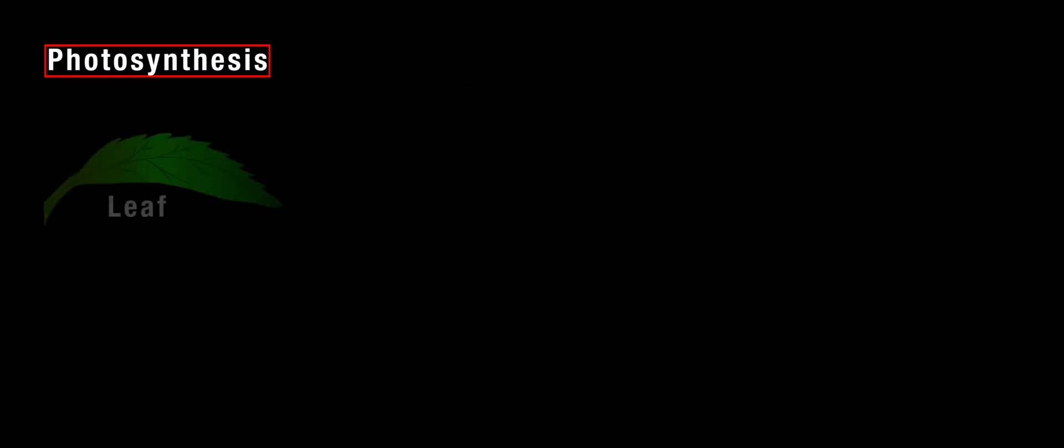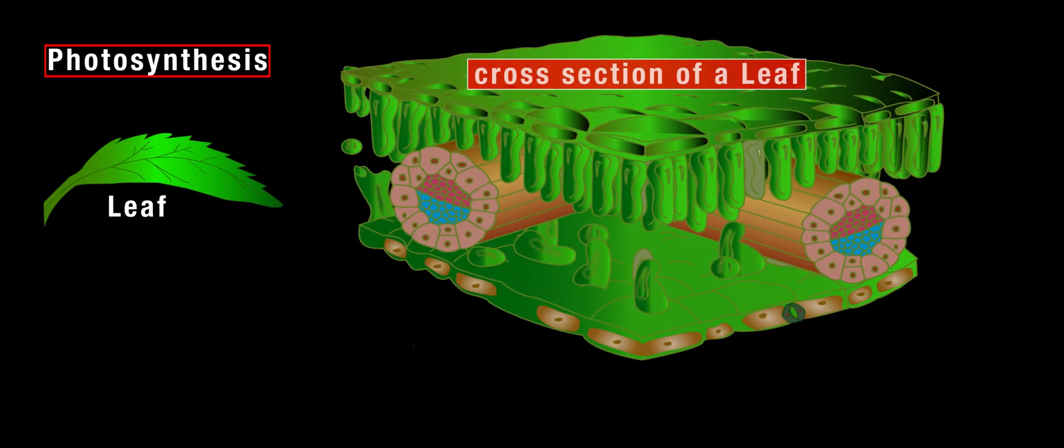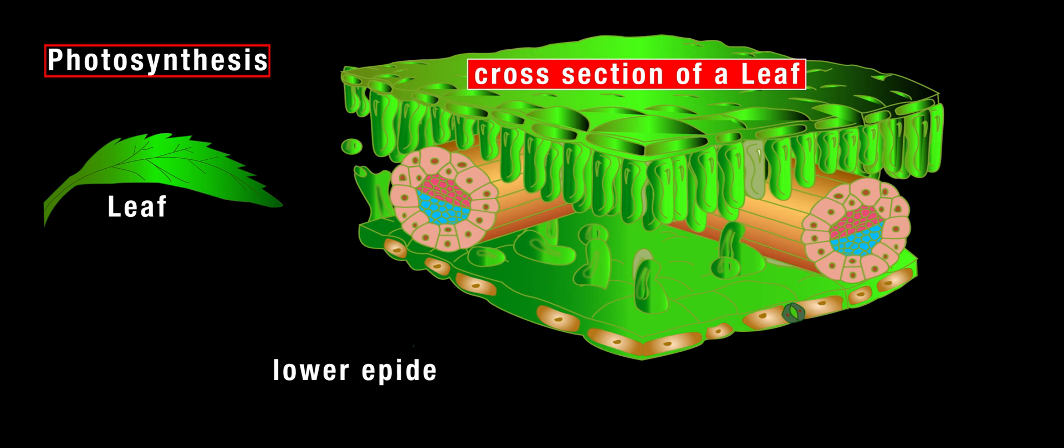Leaves are the major organs of photosynthesis. This is a cross-section of a leaf. In the lower epidermis, there are specialized structures called stomata. On either side of the stomata, there are cells called the guard cells.